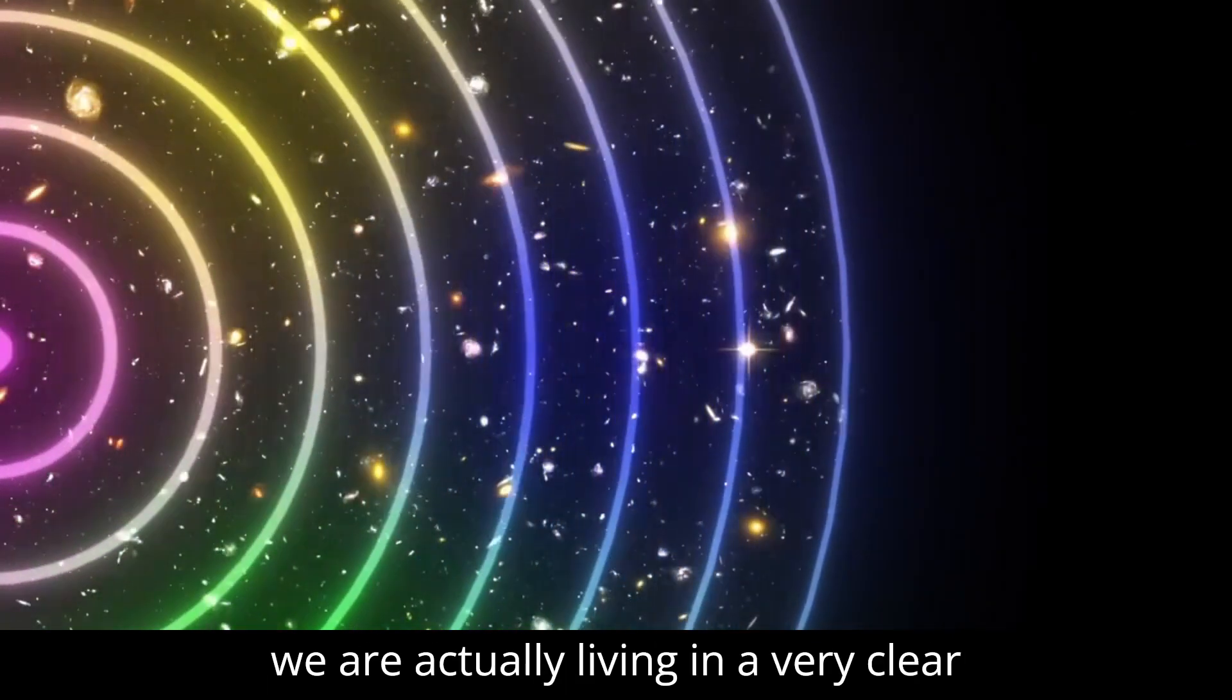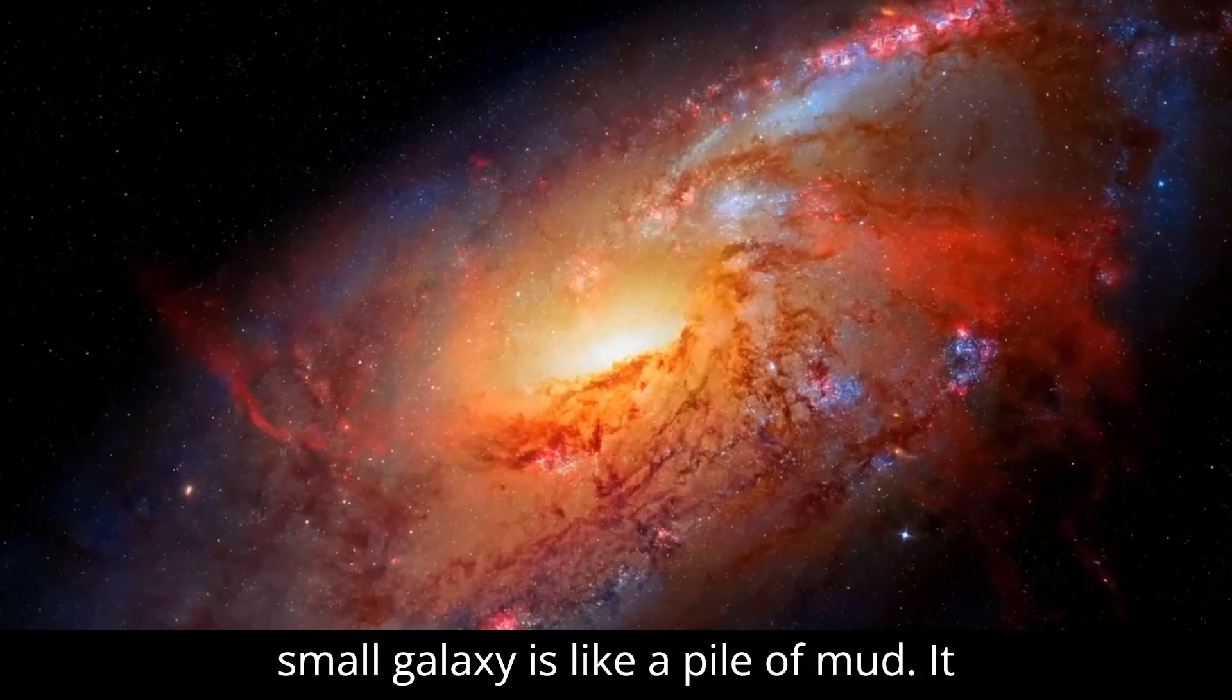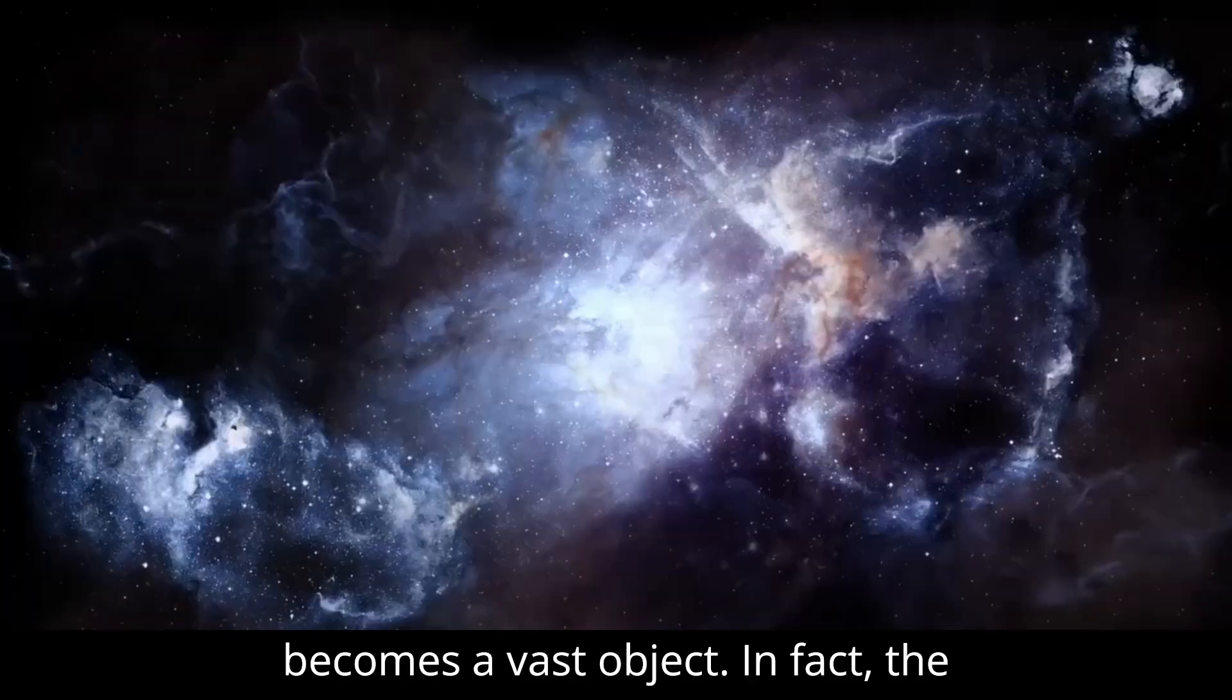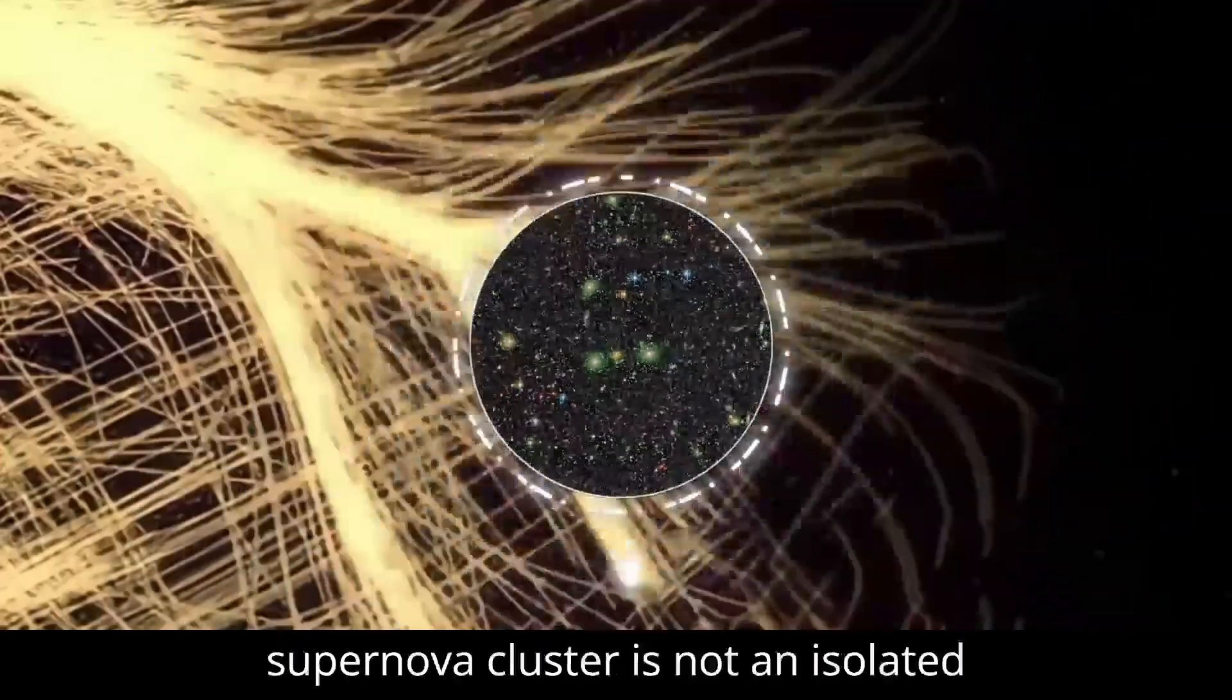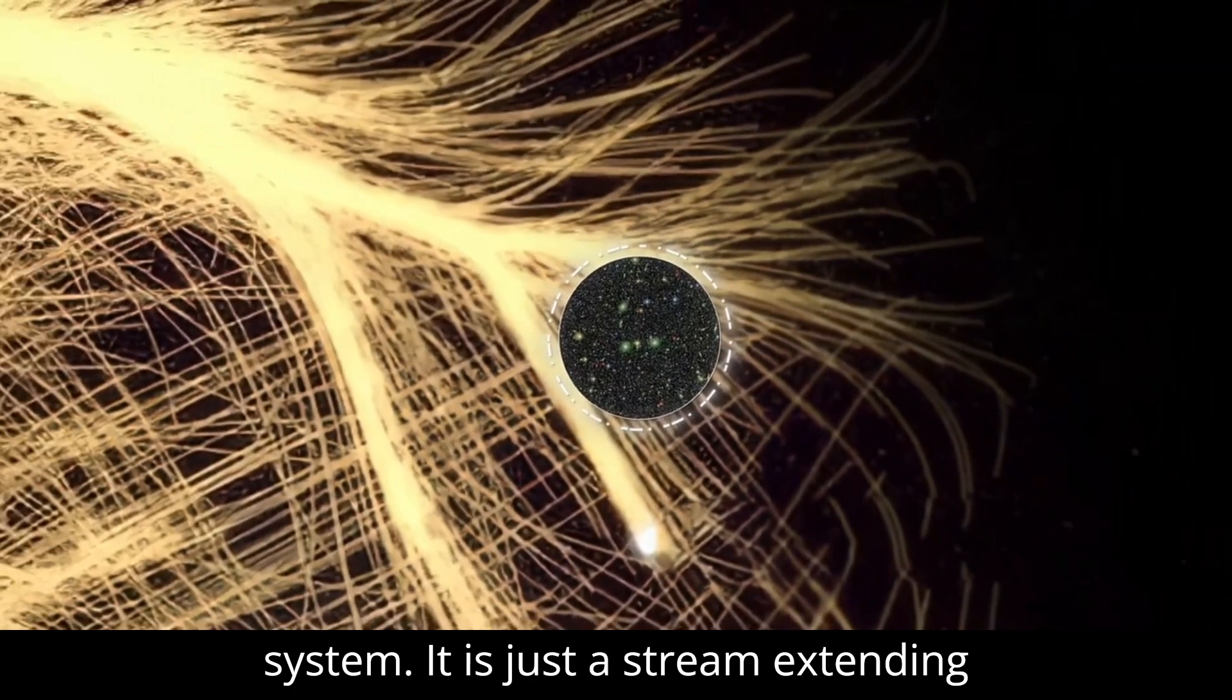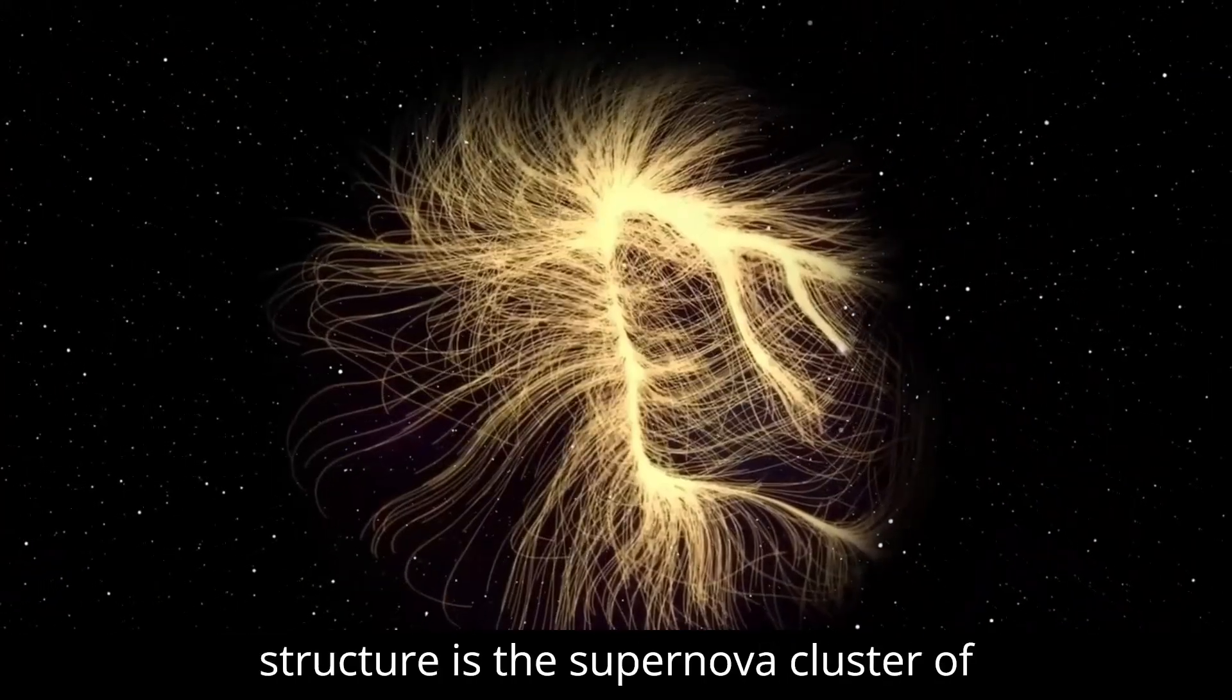All signs tell us that we are actually living in a very clear cosmic network of structural layers. The small galaxy is like a pile of mud that falls like a chicken, and in the end it becomes a vast object. In fact, the supernova cluster is not an isolated system. It is just a stream extending from a larger structure. This huge structure is the supernova cluster of Laniakea.